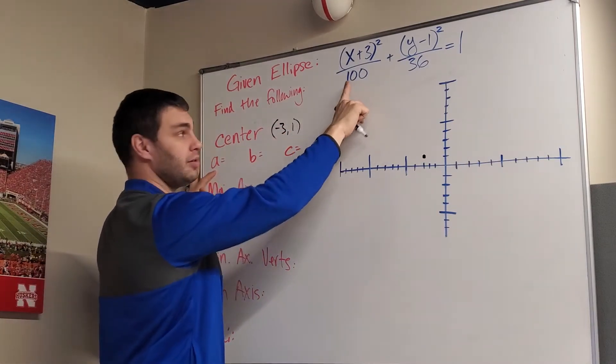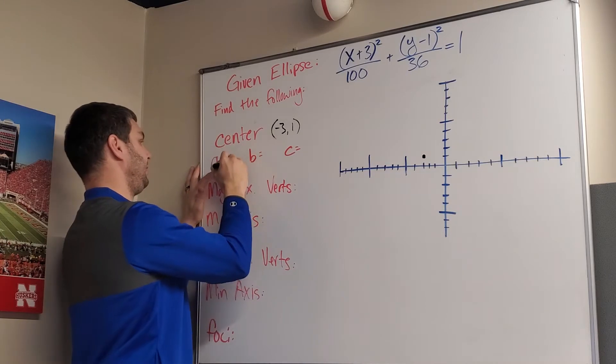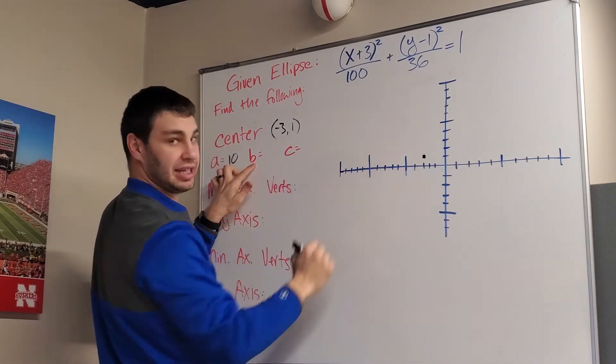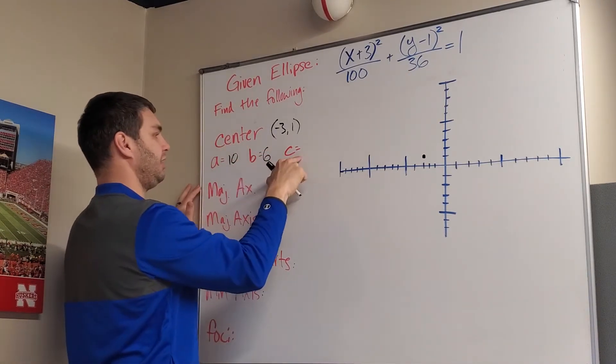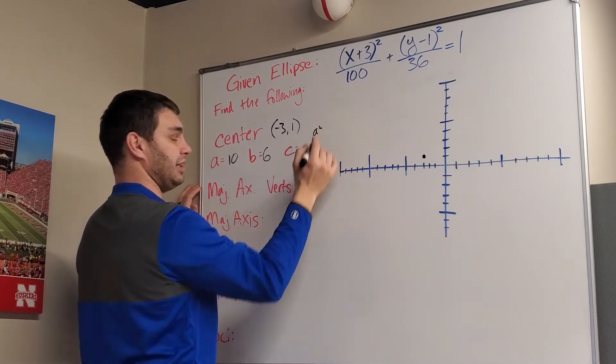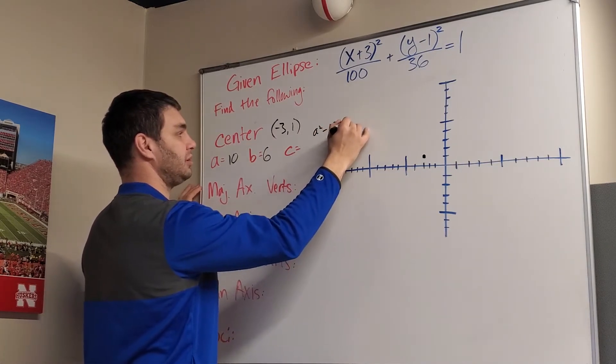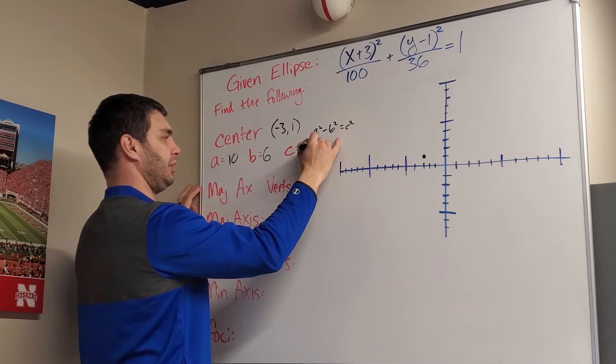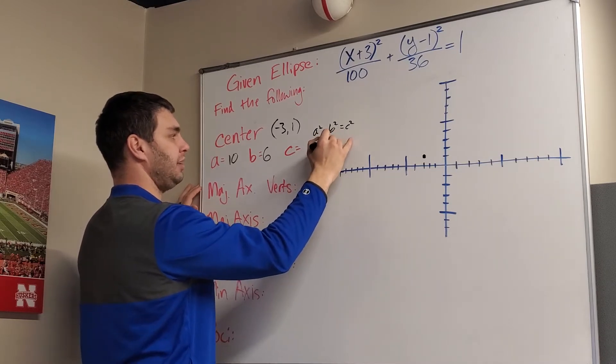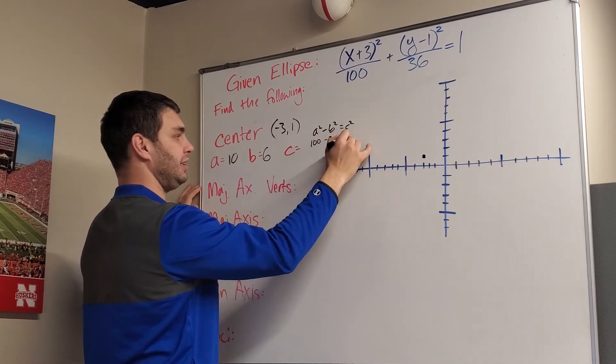Our a is the square root of our first denominator, which is 10. Our b is the square root of the second denominator, which is 6. Then our c is going to be, we use the equation a² - b² = c². Where here, this is going to be 100 minus our b² was 36 equals c².